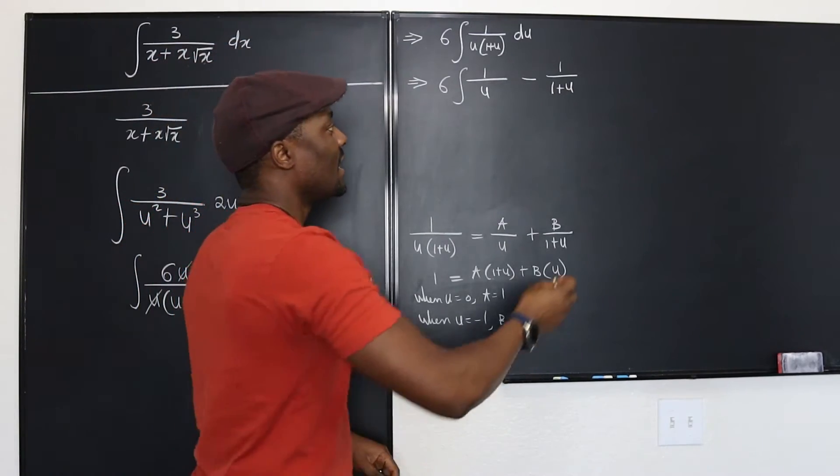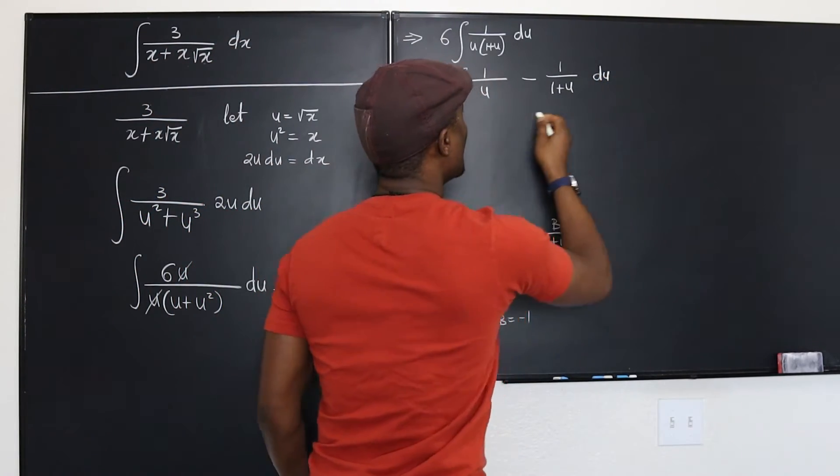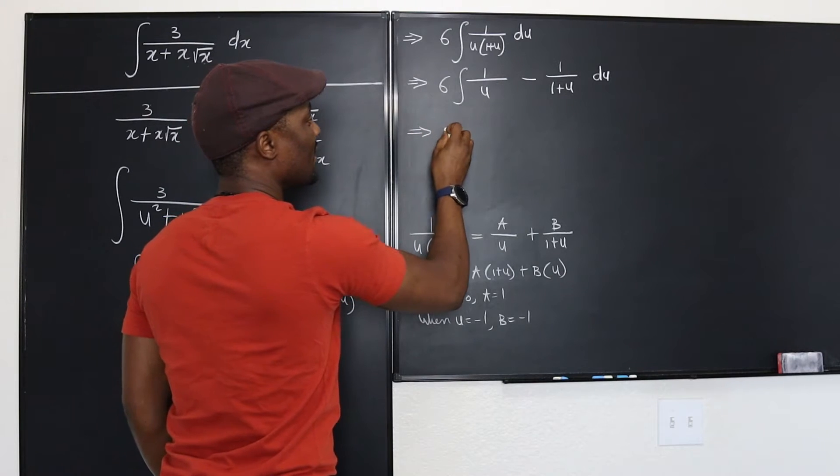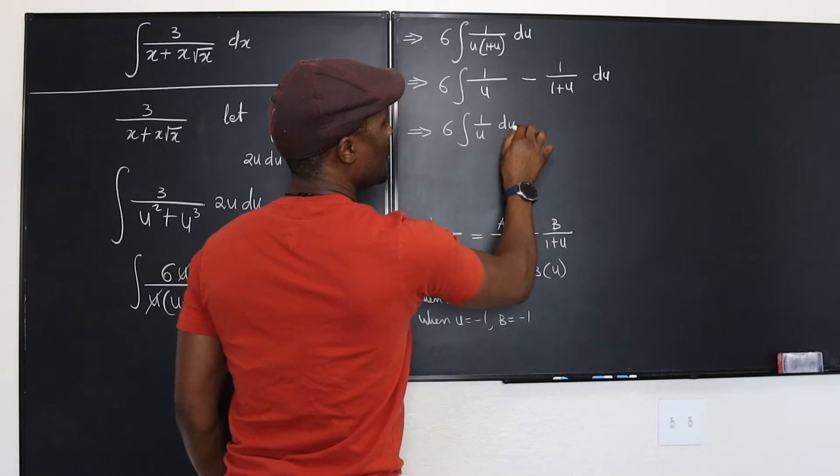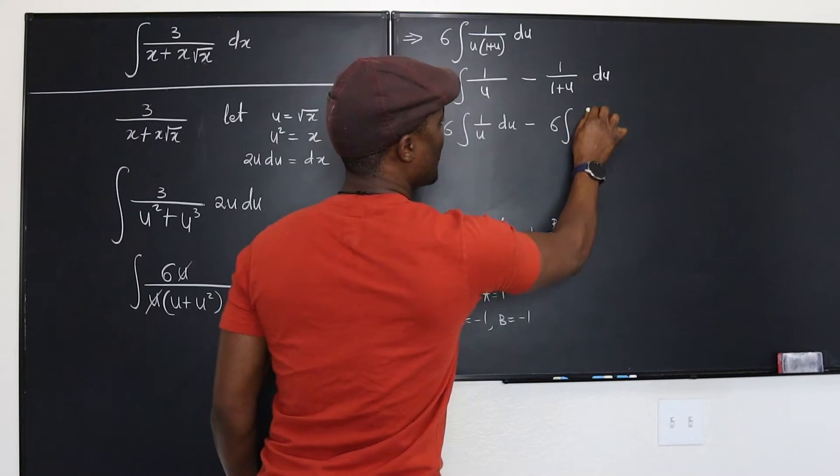Let's integrate. This is 6 integral of 1 over u du minus 6 integral of 1 over 1 plus u du.